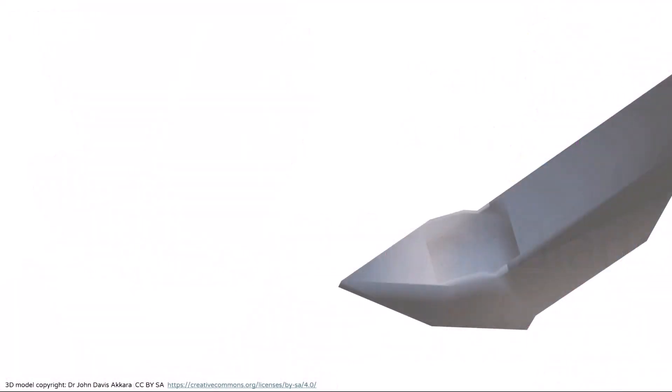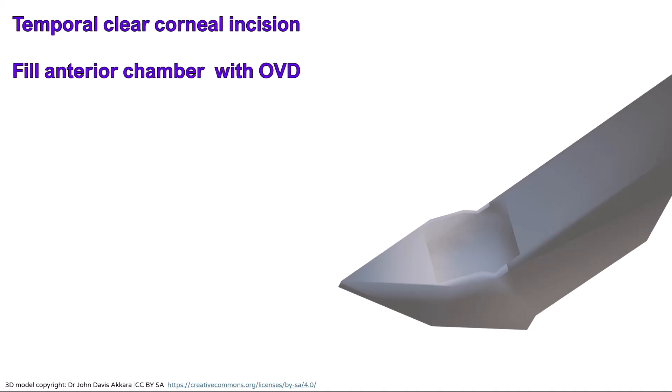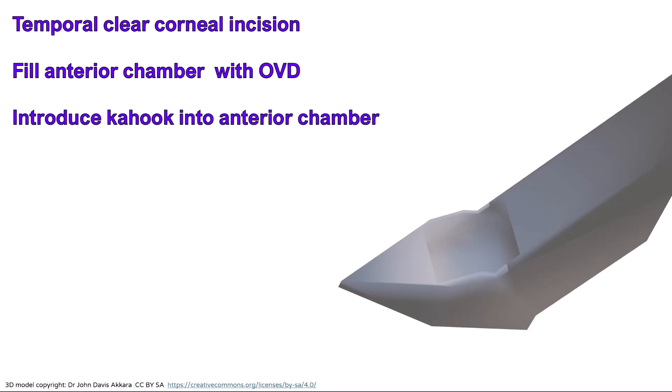In a standalone procedure, after making a temporal clear corneal incision and filling the anterior chamber with OVD, the Kahook dual blade is introduced into the anterior chamber and a direct gonioscope is placed on the cornea with the help of a coupling medium.